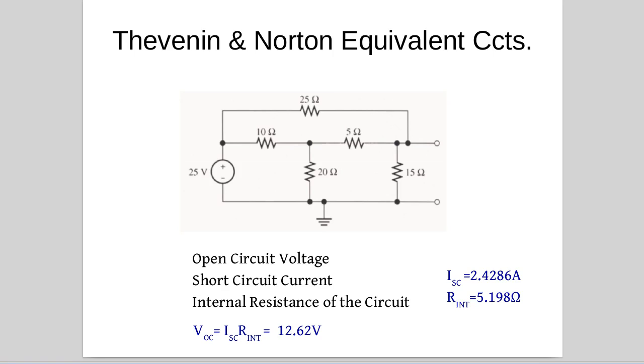So now we've got the short circuit current, 2.4 amps, the internal resistance, 5.2 ohms and if we multiply those two together we get the open circuit voltage, 12.62 volts. As you realize we've now got all three items which allow us to build either our Thevenin or Norton equivalent circuit.